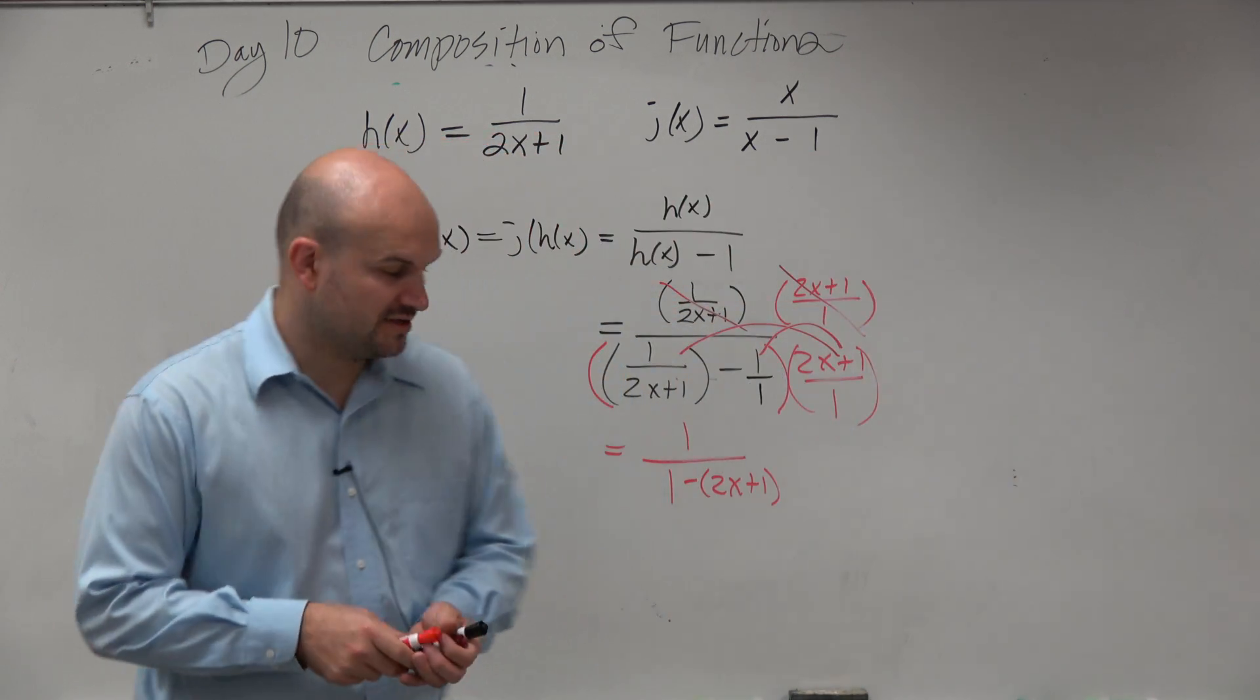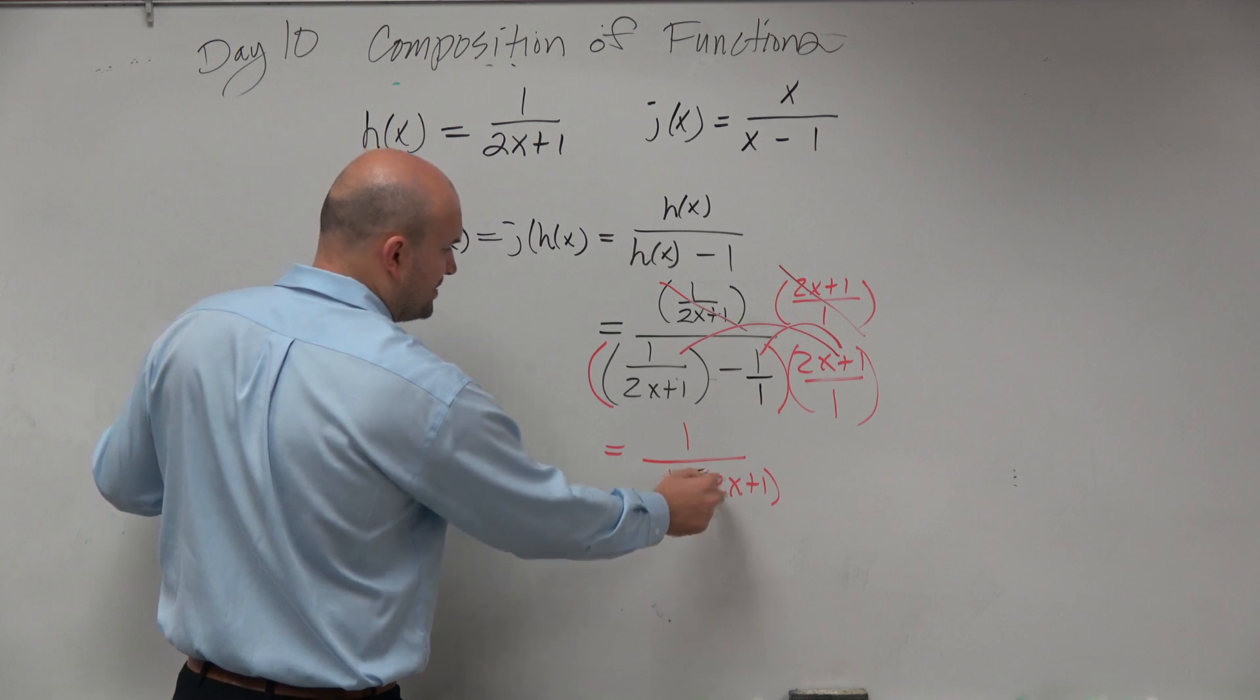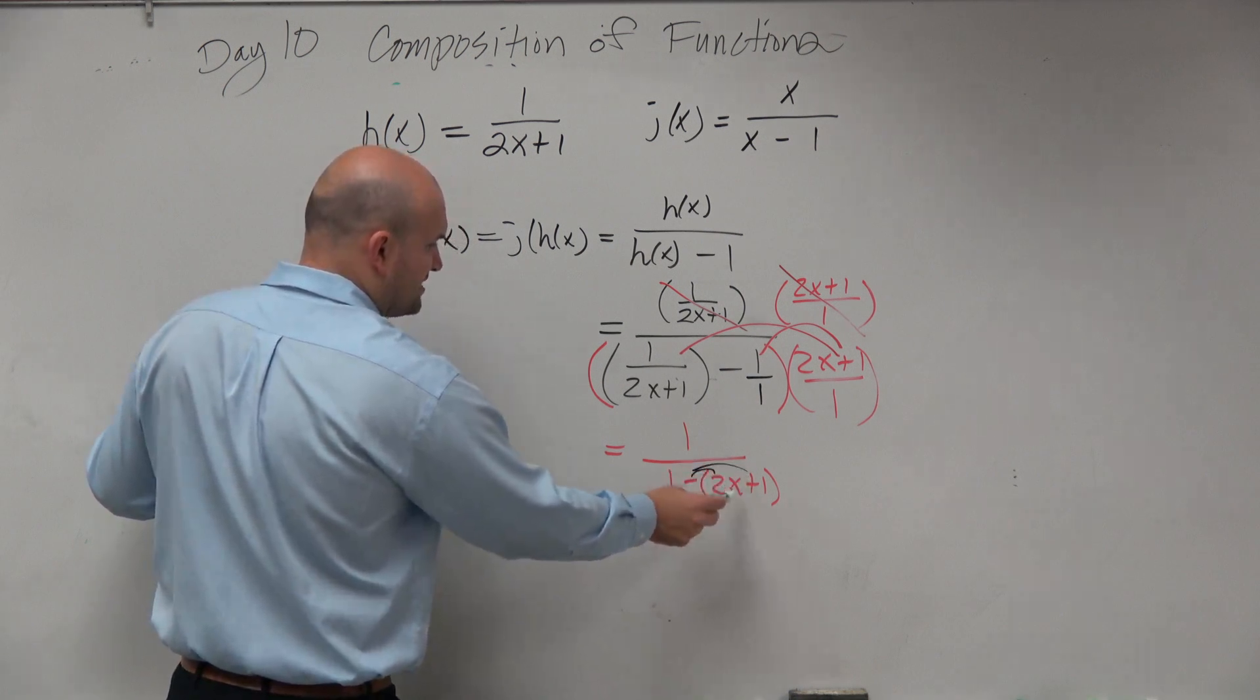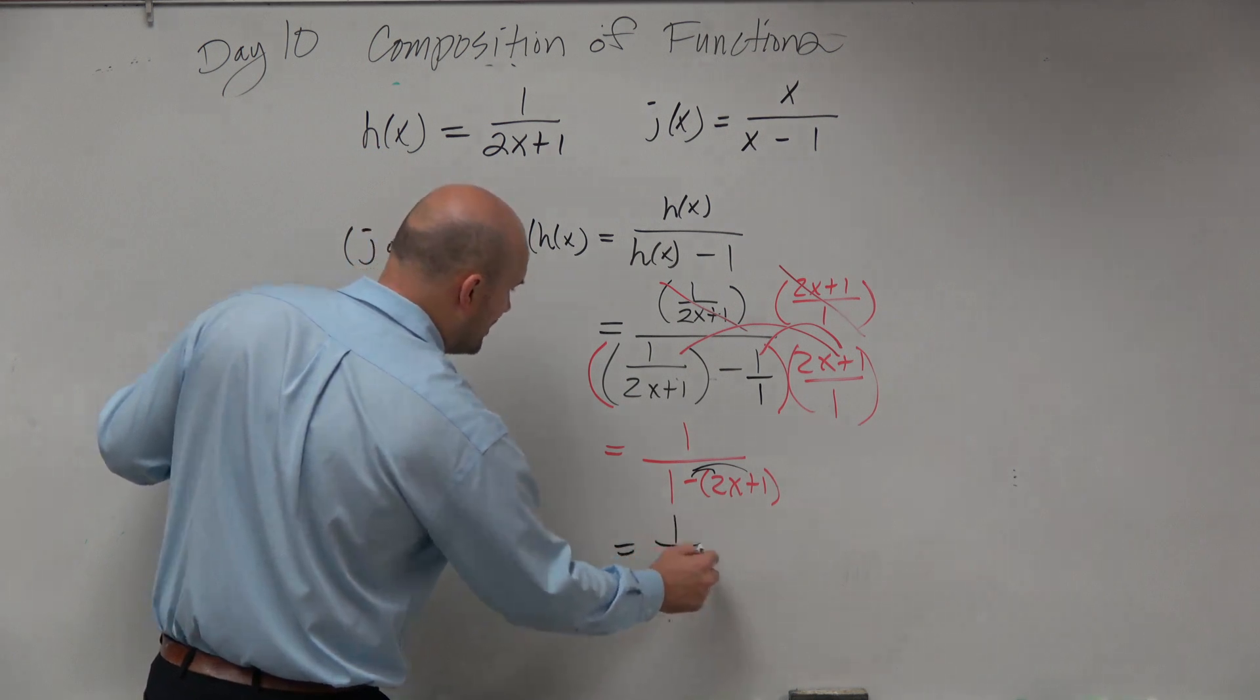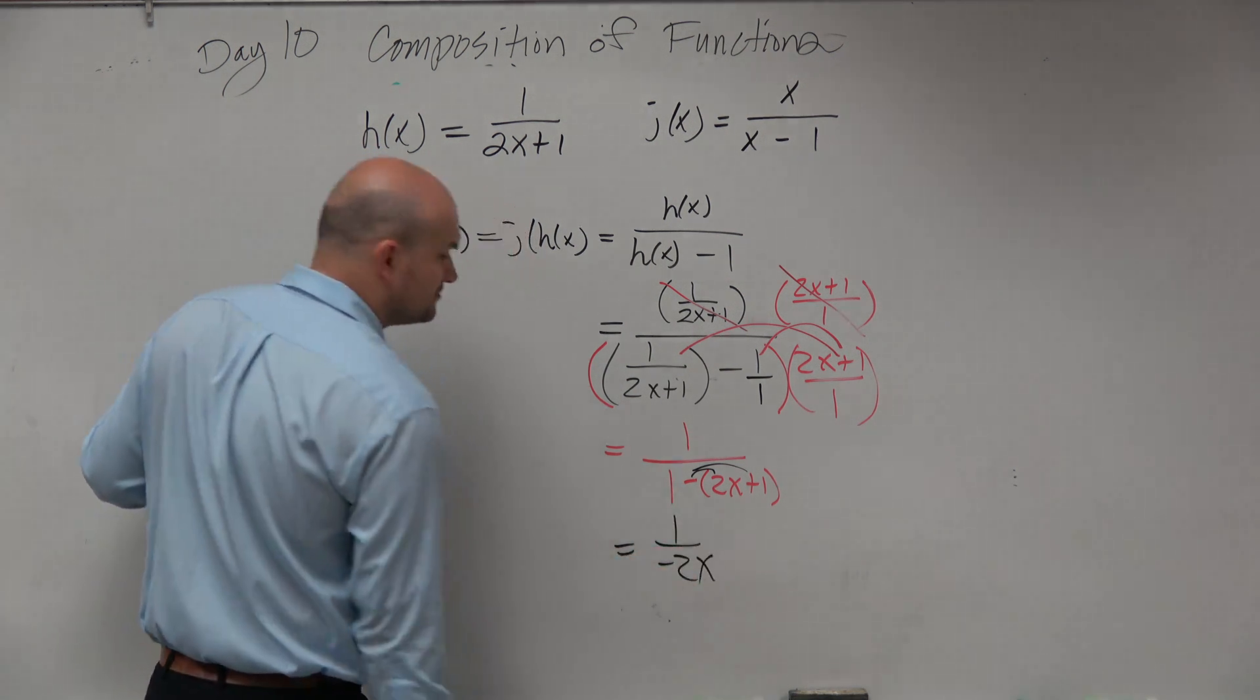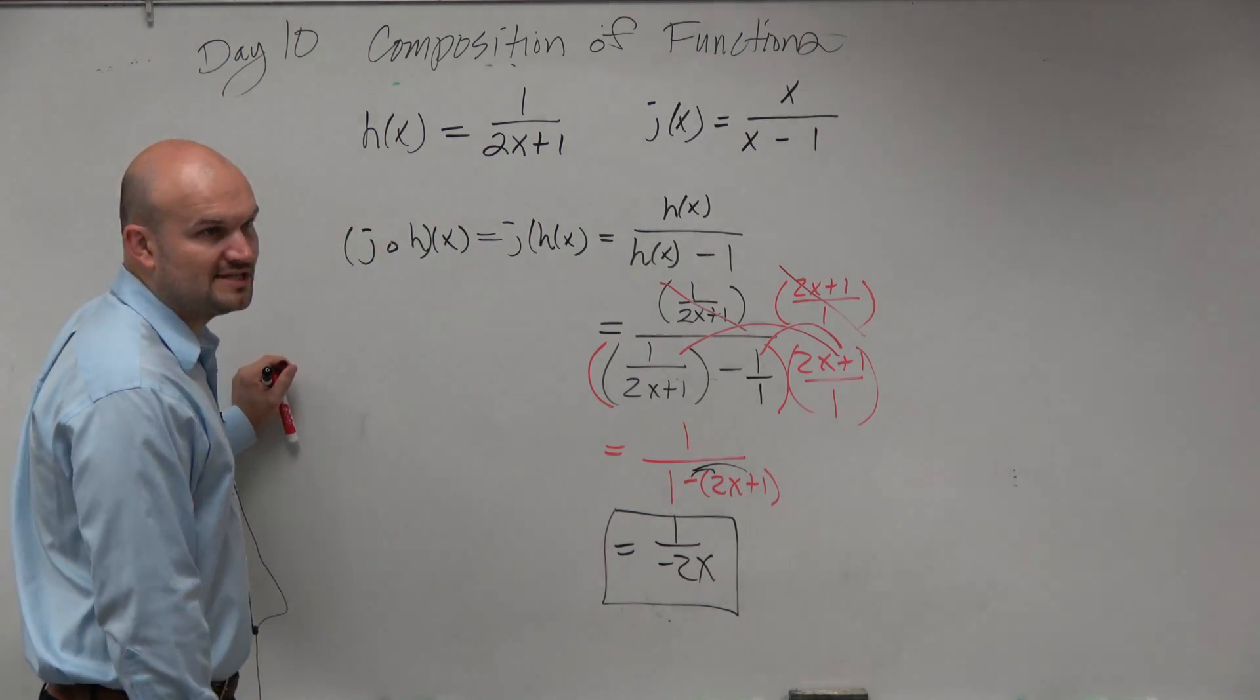So, now let's just go ahead and simplify it. For time purposes, I'm going to do this in here. So, I'm going to distribute the negative. So, I'll get a negative x and then I'll get a minus 1. So, that goes to 0. So, I'm left with 1 over a negative 2x. That is my simplified answer.